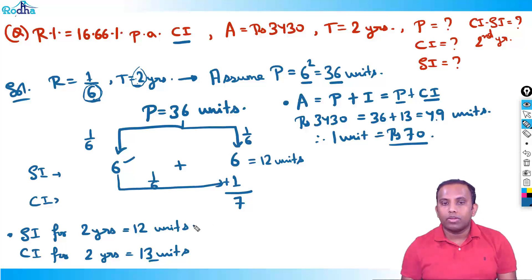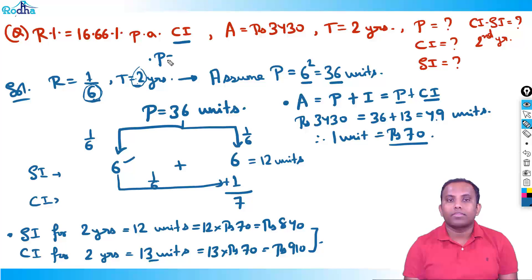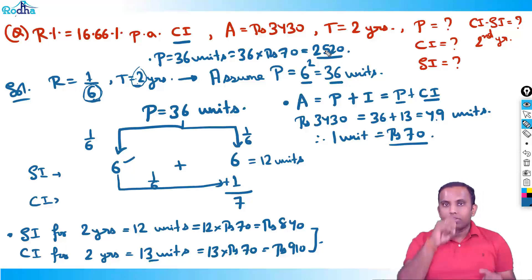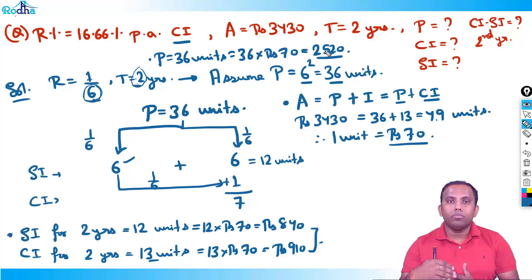One unit is 70 rupees. What is SI? SI is 12 units, so 12 × 70 = rupees 840. What is CI? 13 units, so 13 × 70 = rupees 910. What is principle? 36 units, so 36 × 70 = rupees 2520. Everything you can get with this concept — without decimals, without fractions. Just assume the data based on whatever is in the rate's 1/x form, raised to the time period.